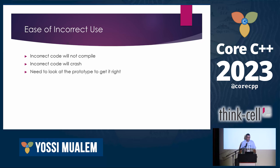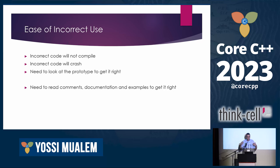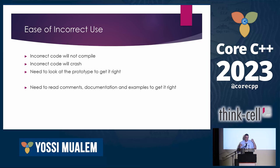The third best thing is that you need to look at the prototype to get correct usage — that was where we started with class date. Far, far worse than this is cases where you need to read a lot of comments, documentation, or examples to get it right. What I mean is that if an API looks very simple but has hidden assumptions or preconditions in the comments that the user cannot be aware of without reading them — that's something bad. We'll see an example for this in just a few slides.